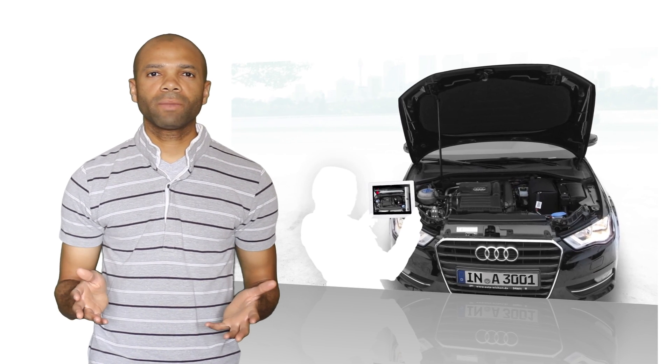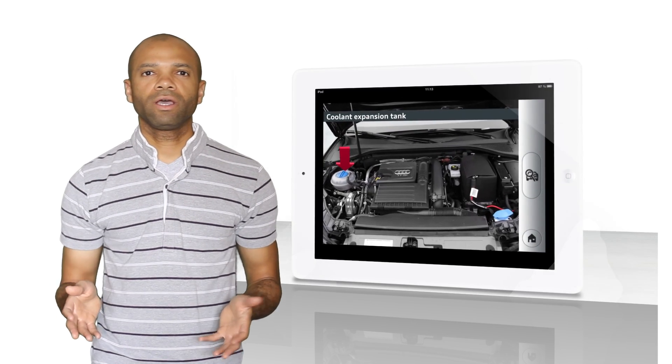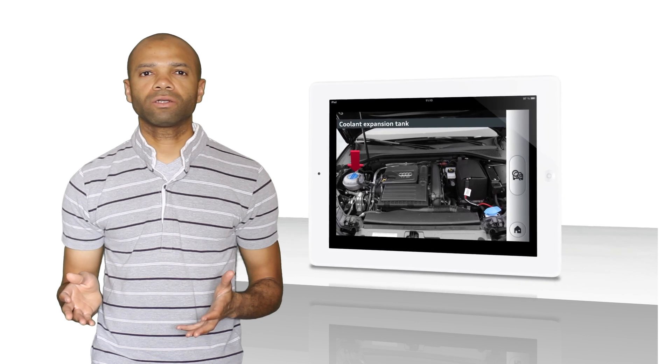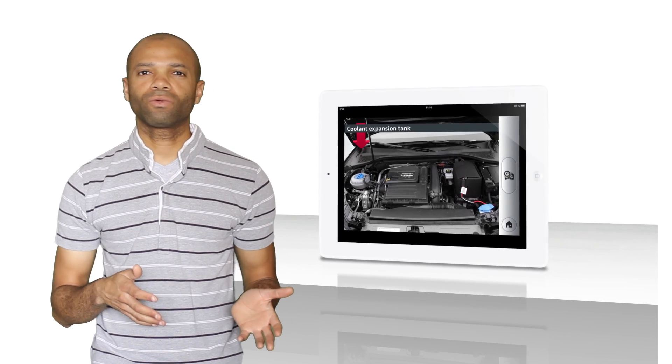That feature alone would put this app in a class all its own, but Audi took things one step further. Pointing your camera under the hood, the system automatically recognizes your engine version and overlays labels indicating maintenance related parts like your oil dipstick or radiator cap.